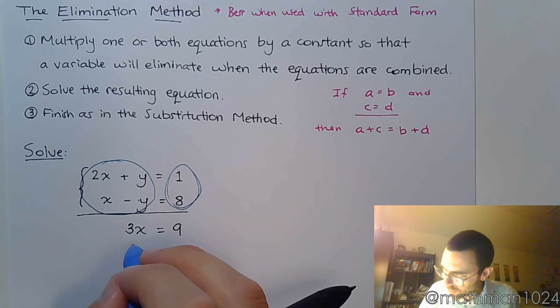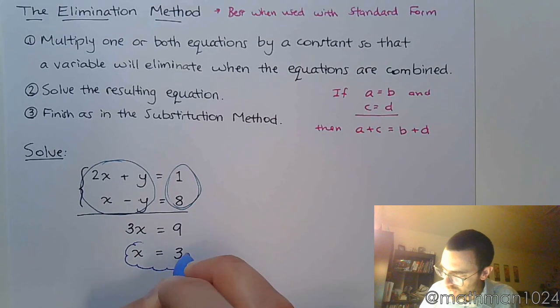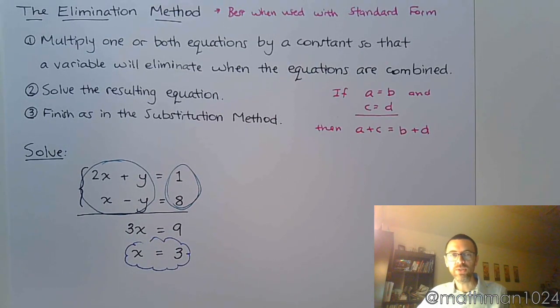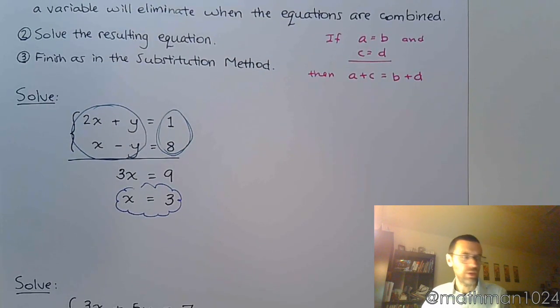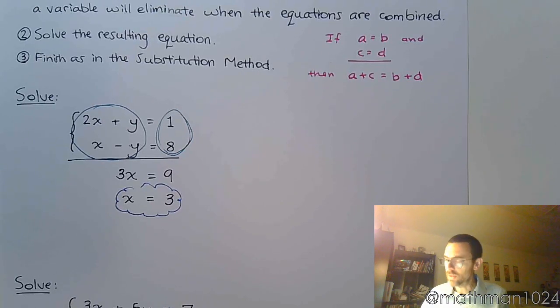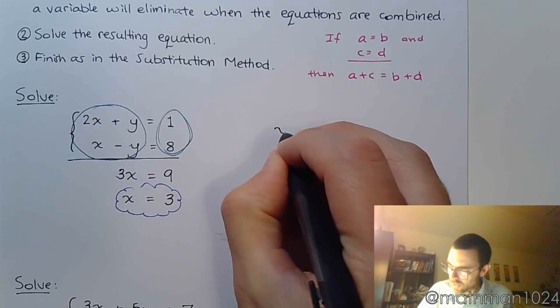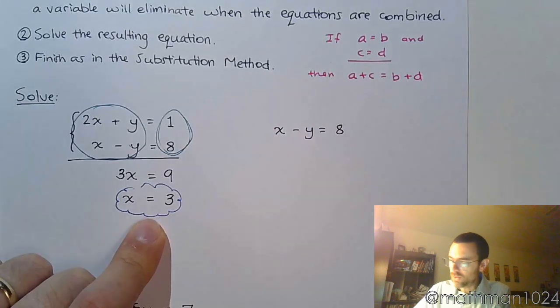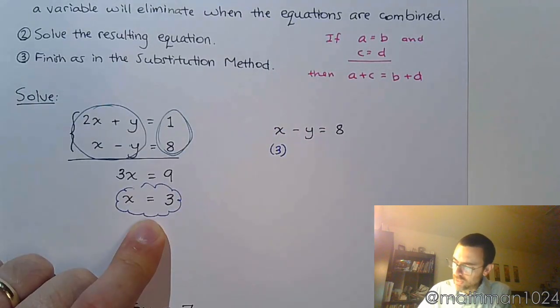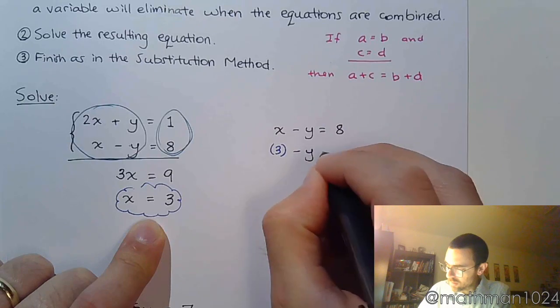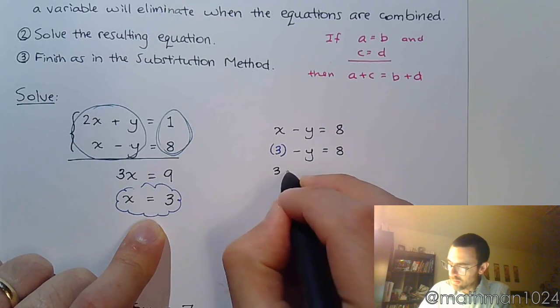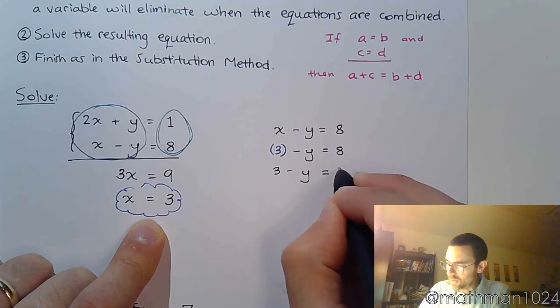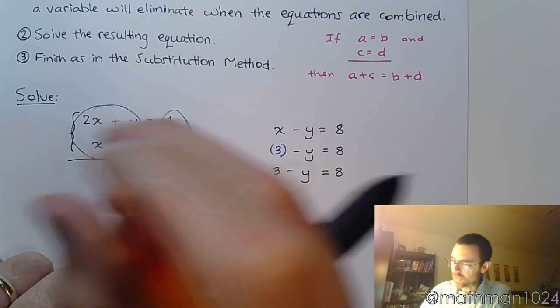Now, we're not done, right? So we just have part of the answer, that x equals 3. Plug it into one of the original equations to find y. Now, the first time we did it, I believe we plugged it into the first equation. So let's plug it into the second one. So if I go x minus y equals 8, I know that x is 3.